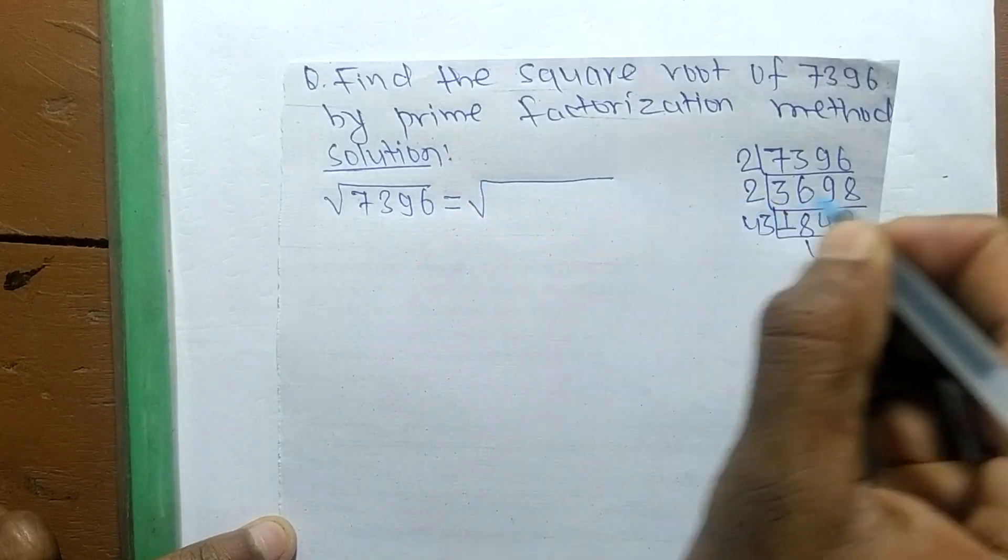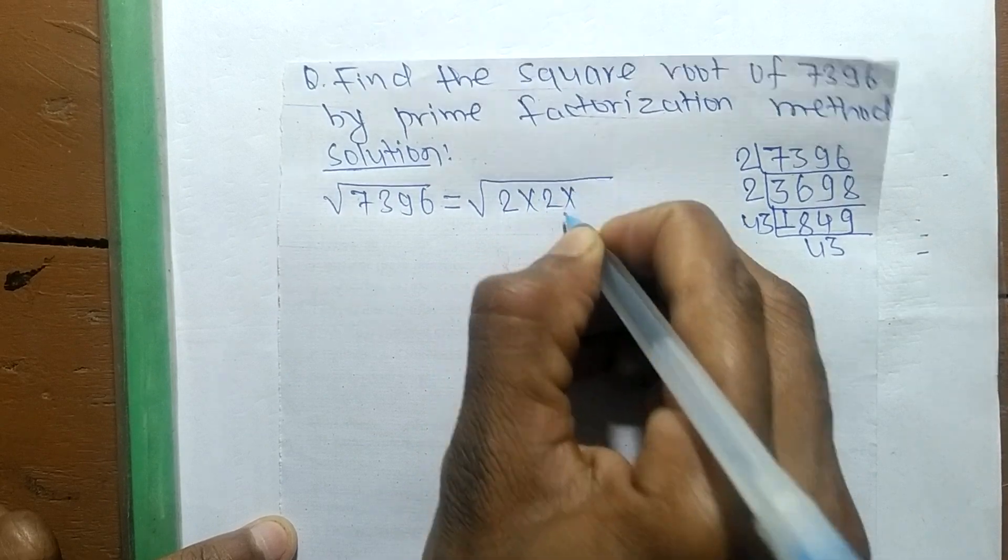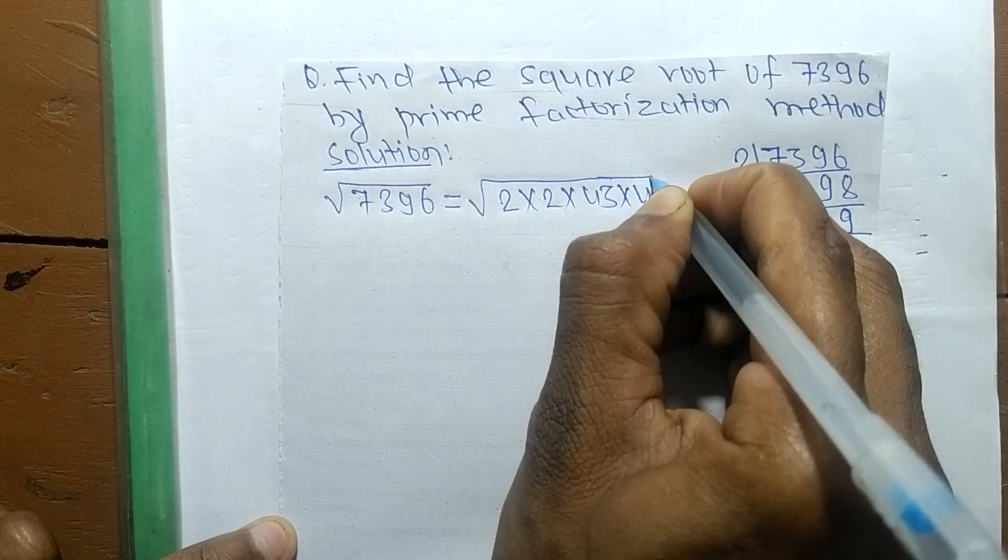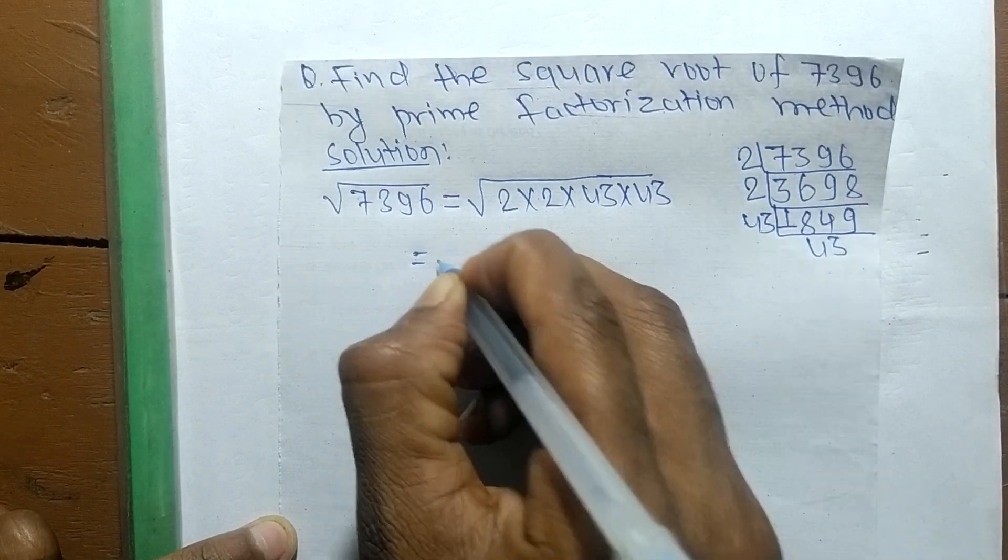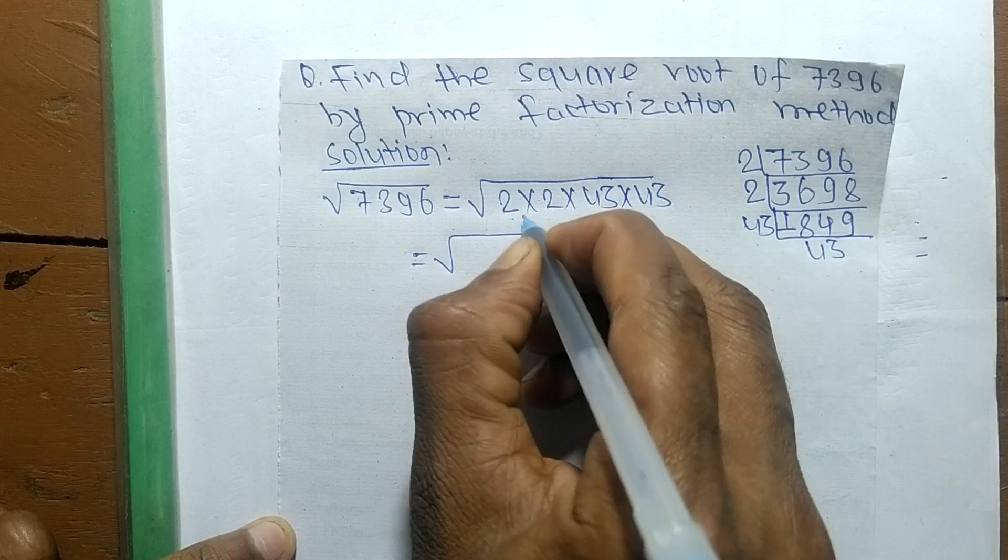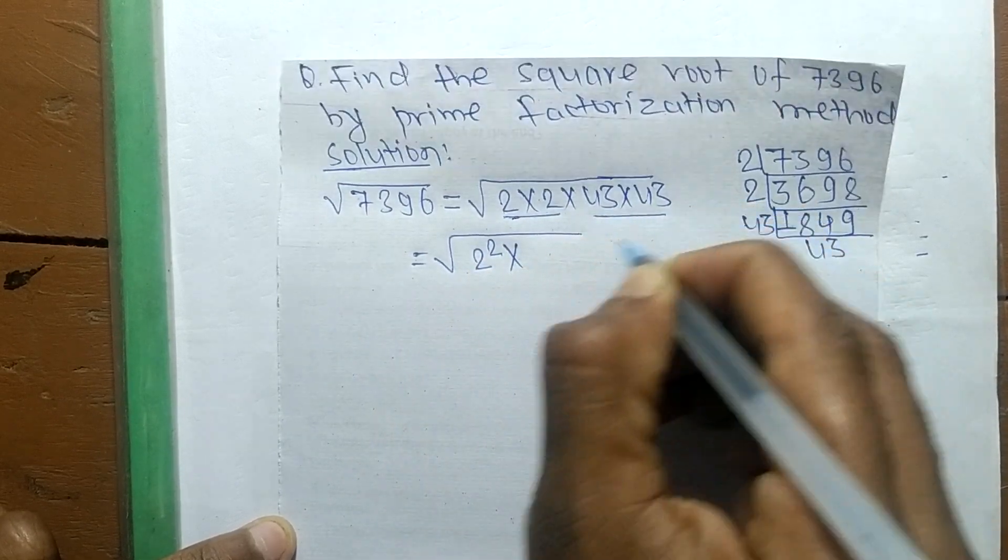The square root of 7396 from these prime factors can be written as 2 into 2 into 43 times 43. We are finding a square root, so we make the square of all these numbers: 2 into 2 is 2 squared, 43 into 43 is 43 squared.